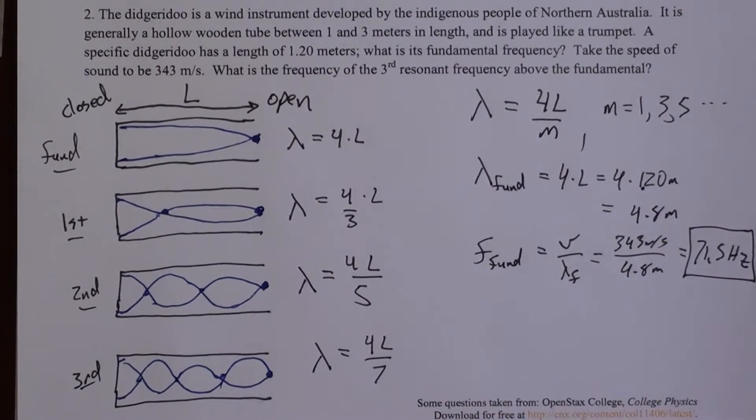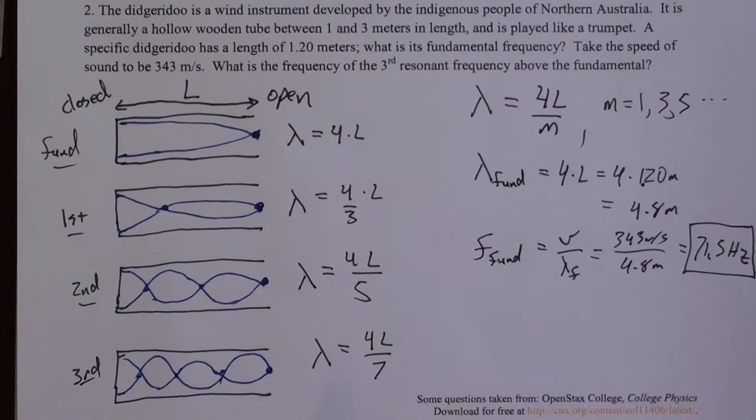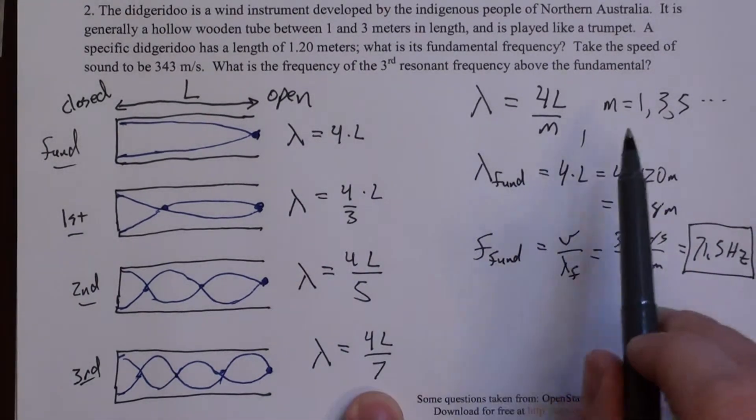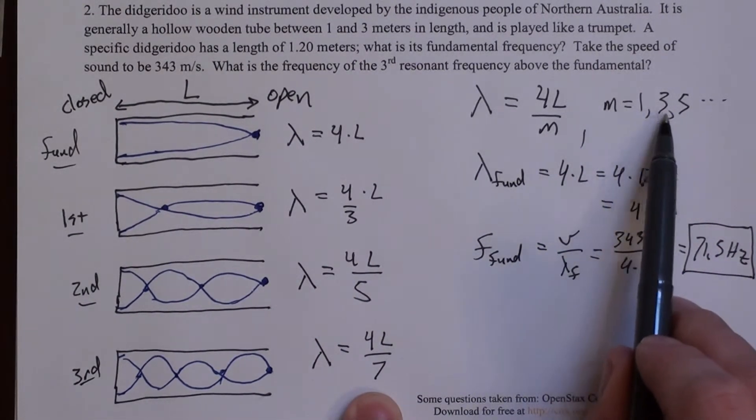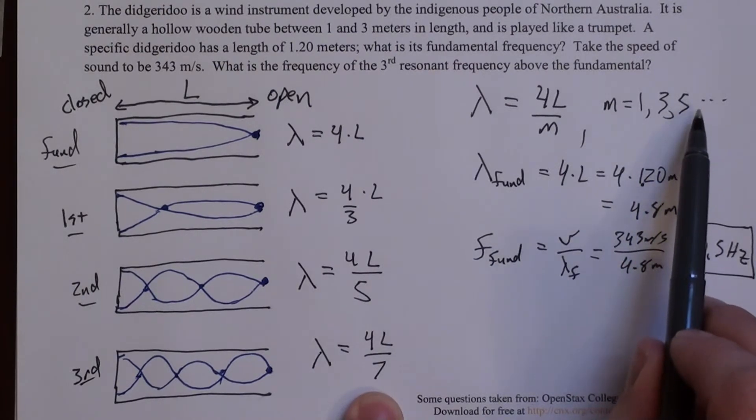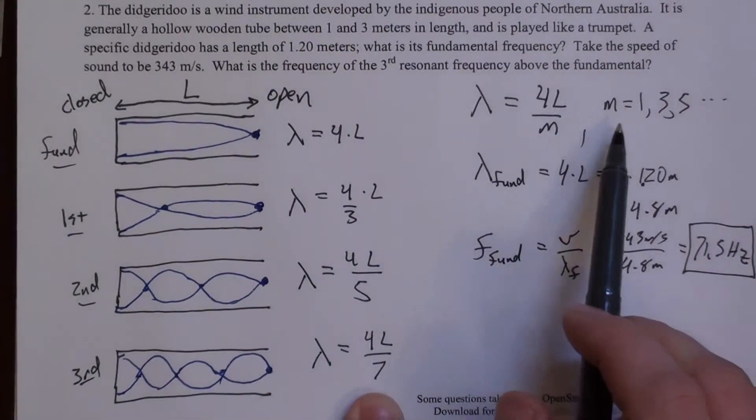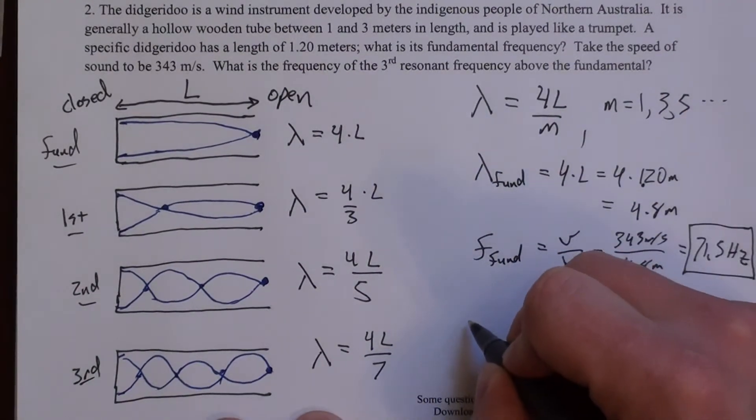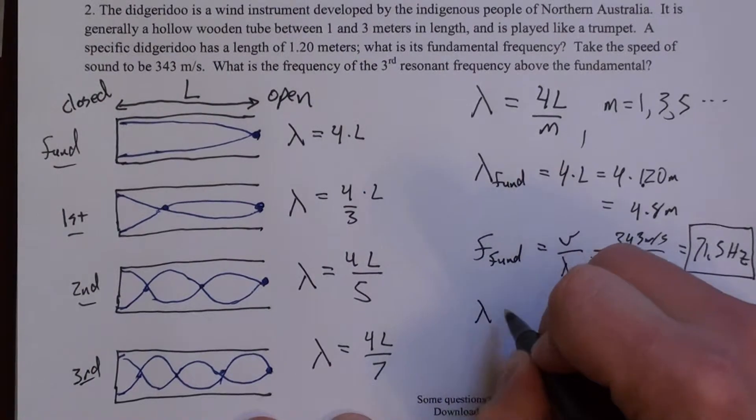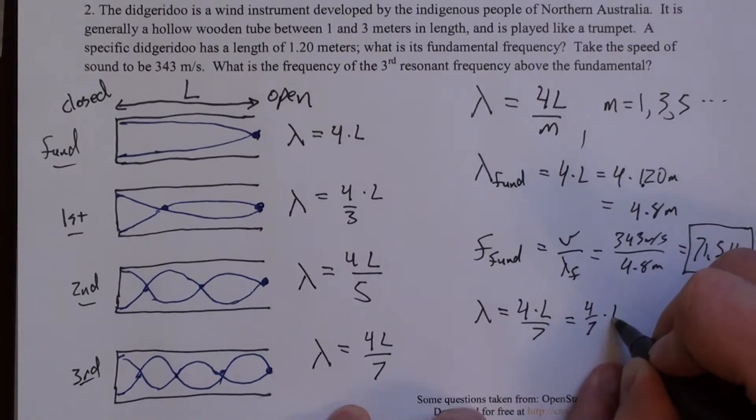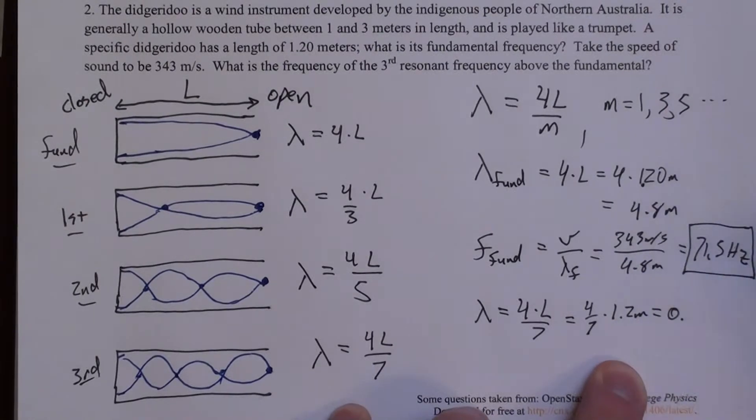So then the next thing we're asked for is what is the third harmonic above the fundamental. So the fundamental is this one. Here's the first harmonic, the second harmonic, this is the third harmonic. So it's the one that has a 7 in it. And the reason I'm pointing that out is if you look at the m's, we're not looking at the third m, we're actually looking at the fourth m, because this is the third one above the first one. Does that make sense? So it's like we're starting from 0, but you can't put m equals 0. So we have a lambda for that. It would be 4L over 7. And if you do that math, that's 4 sevenths times 1.2 meters, or 0.6857 meters.